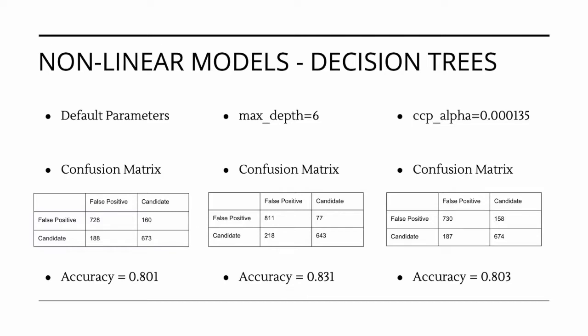Our final decision tree was tuned over CCP alpha. CCP alpha is a parameter that controls the size of the tree by pruning the formed tree. This is done by gradually pruning the weakest link, or the nodes with the smallest effective alphas. As CCP alpha gets larger, the more pruned our tree becomes. Using a search and evaluating accuracy over various CCP alpha values, we decided to evaluate our final tree with a CCP alpha value of 0.000135. This resulted in our final decision tree with an accuracy of 0.803. Of the three decision trees, the tree that was tuned using max depth was the best performing in terms of accuracy.